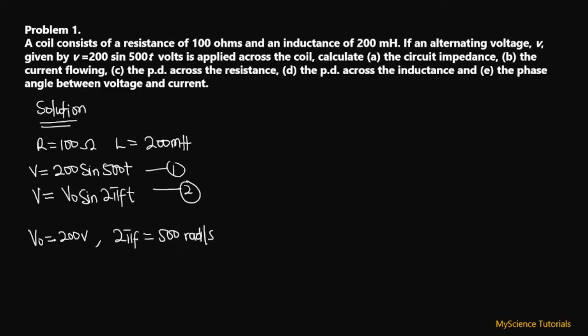To calculate the applied voltage used in this circuit, we use V_rms = (√2/2) × V₀ = 0.707 × V₀. This is how we find the RMS voltage in this particular case.